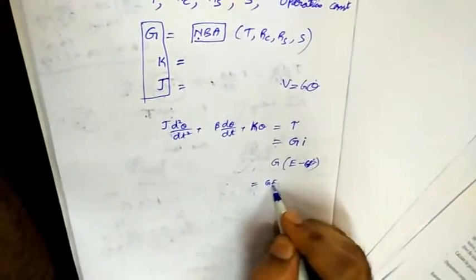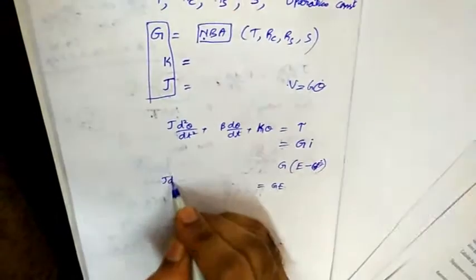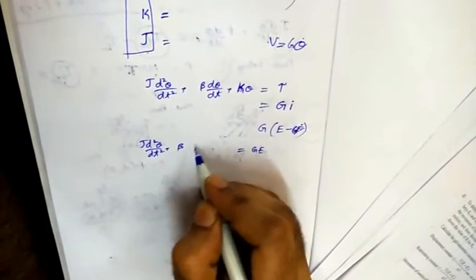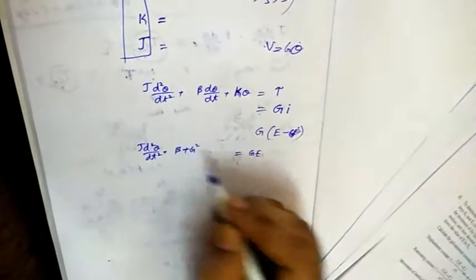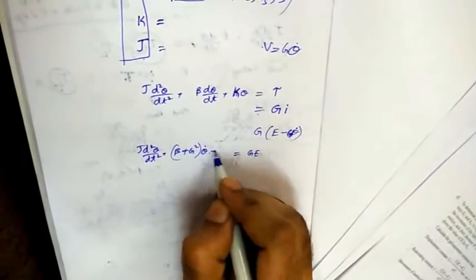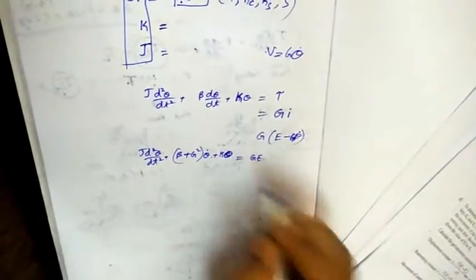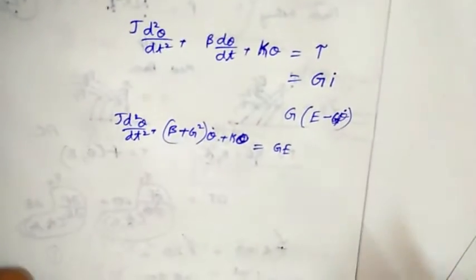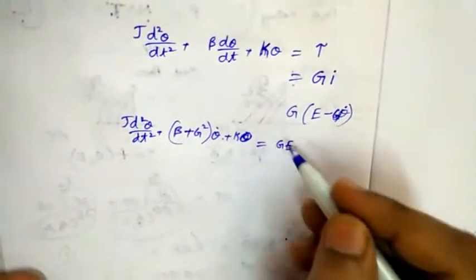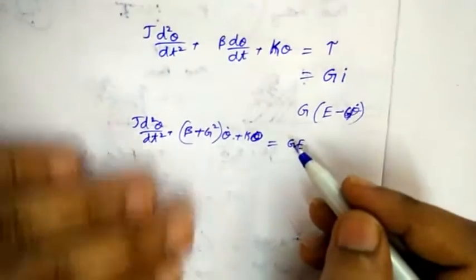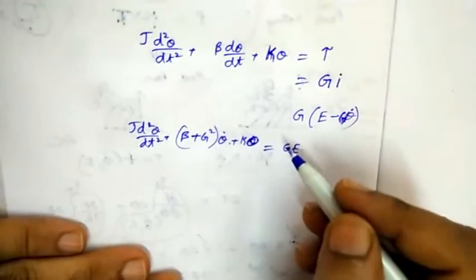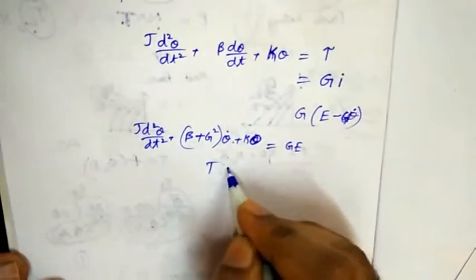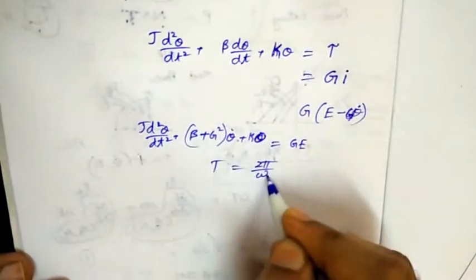If you take it to that side, J d²θ/dt² + (B + G²) dθ/dt + Kθ. So, if you solve this, if you apply that critically damping condition, and if you do a little bit of rearrangement, if you consider your T is equal to 2π by ωn, time period is nothing but 2π by ωn and this is a second order system.